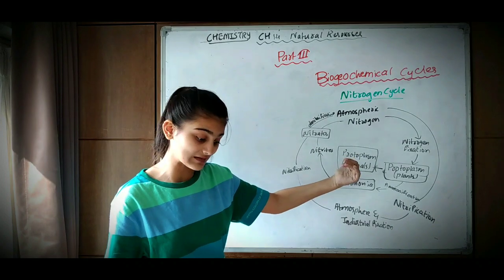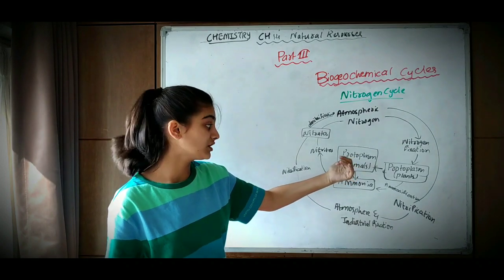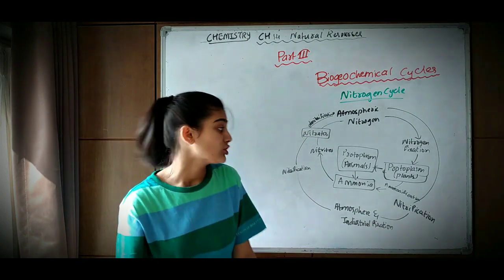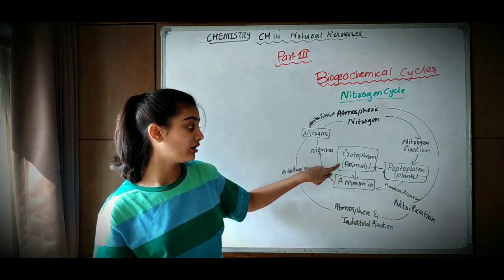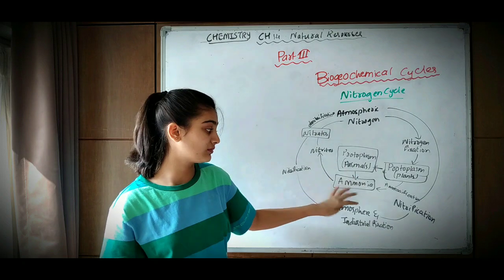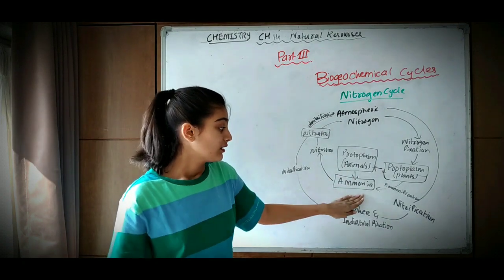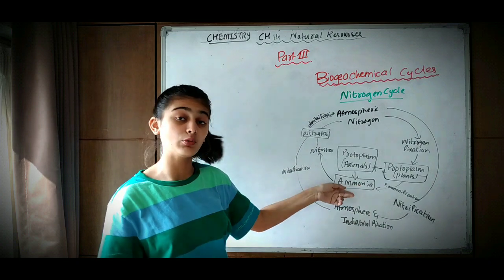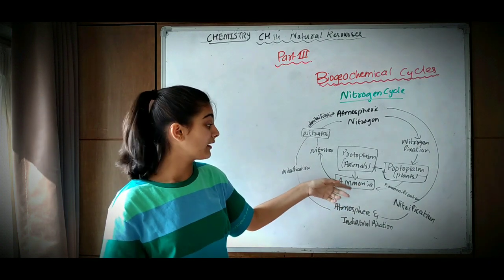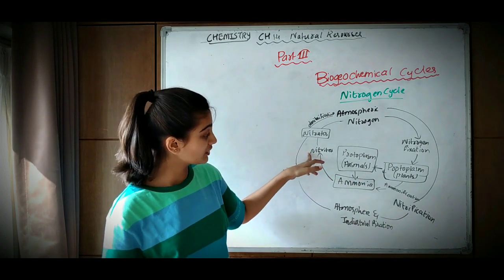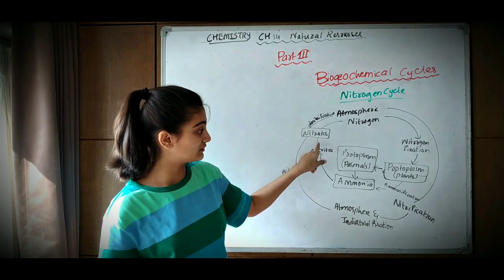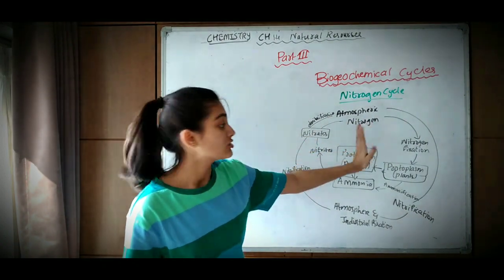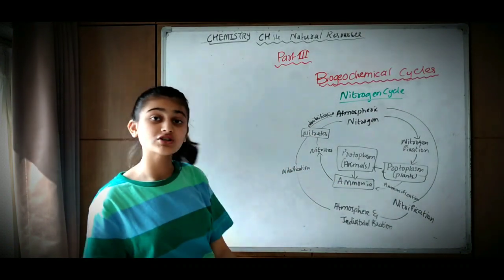Then these plants get consumed by animals — animals eat plants. So nitrogen from plants comes into animals, and these animals release it in the form of ammonia. Ammonia gets converted into nitrites and then nitrates, which again go back to the atmosphere. So this is one nitrogen cycle.